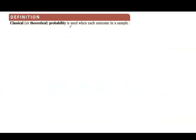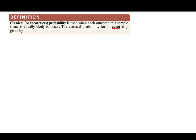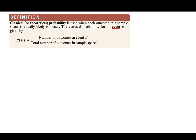Now let's look at the definition of classical or theoretical probability. Classical probability is used when each outcome in a sample space is equally likely to happen. The classical probability for an event — which you can denote by a capital letter like E, A, B, or C — is given by a fraction: the number of outcomes in the event on the numerator, divided by the number of outcomes in the sample space on the denominator.